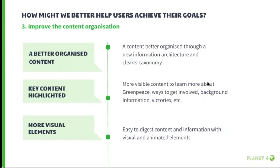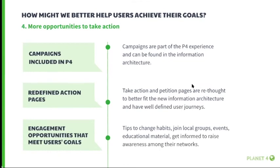We should improve content organization through the new structure and clearer taxonomy, but also by highlighting more key content such as learning about Greenpeace, ways to get involved, background information, victories, etc. We should also bring more visual elements to content so it's easier to digest, consume, and understand. Last but not least, we should provide more opportunities to take action by including campaigns in the P4 experience so they can be found in the information architecture. Take action and petition pages should also be rethought to better fit the new structure with well-defined user journeys and more actions that meet user goals, such as tips to change habits, joining local groups, events, and educational material.